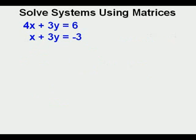Let's look at this system of equations. We have 4X plus 3Y equals 6 and X plus 3Y equals negative 3. We have to look carefully and see that each equation is in AX plus BY equals C form and we see that they are.